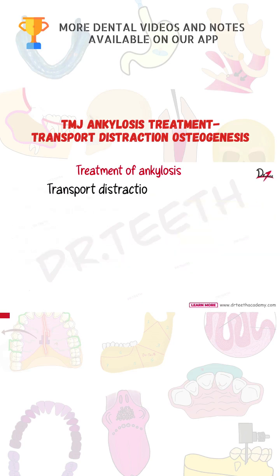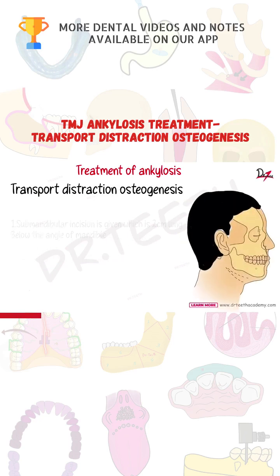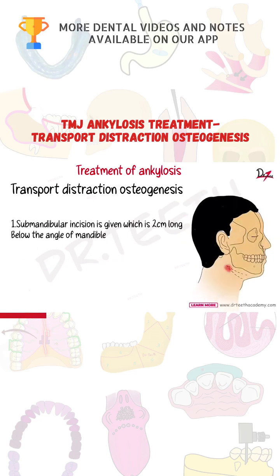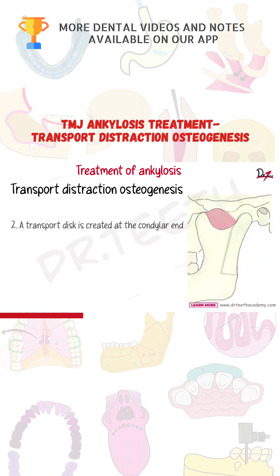The next procedure we are going to talk about is transport distraction osteogenesis. We are giving a submandibular incision, which is a two centimeter long incision below the angle of the mandible.